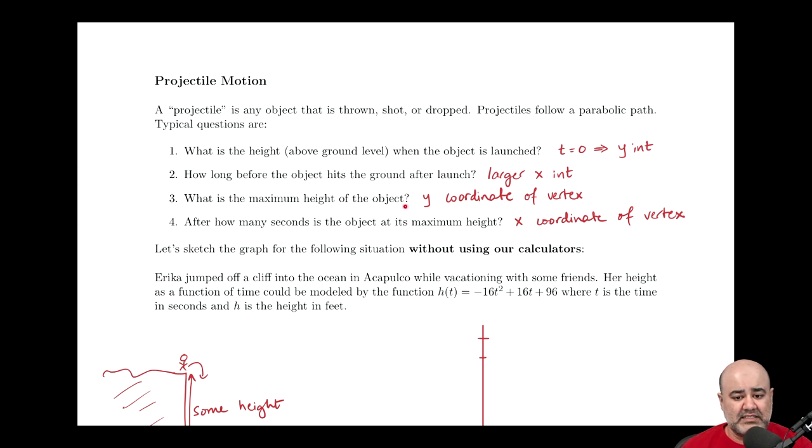What is the maximum height of the object? Here, we're looking for the y-coordinate of the vertex. This shouldn't seem too strange or too new, because the maximum height of a parabola would be the y-coordinate of the vertex. After how many seconds is the object at its maximum height? That's the x-coordinate of the vertex, or the t-coordinate in this case.